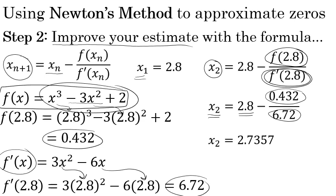This value is closer to the actual zero of the function than our original estimate of 2.8 was. We can continue using Newton's method to get an even better estimate.